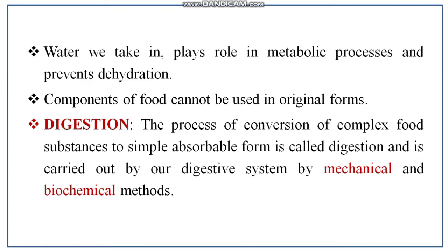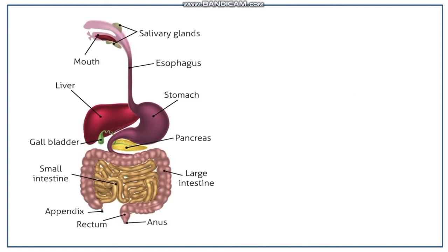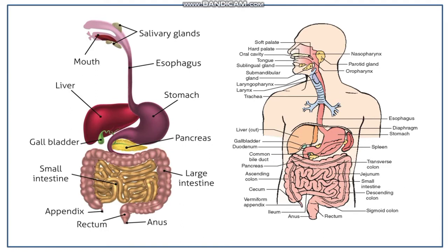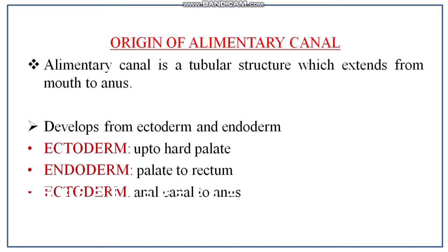Digestion is carried out by two methods: one is mechanical and the other is biochemical. This process is carried out in our digestive system. The human digestive tract comprises the alimentary canal along with digestive glands. The alimentary canal starts from the mouth anteriorly and ends at the anus posteriorly. The digestive glands include salivary glands, pancreas, liver — which is the largest digestive gland — and other glands.